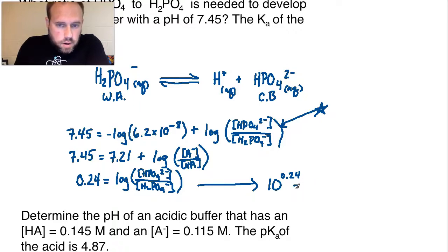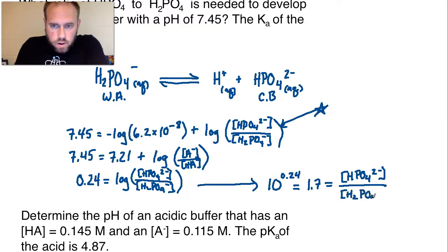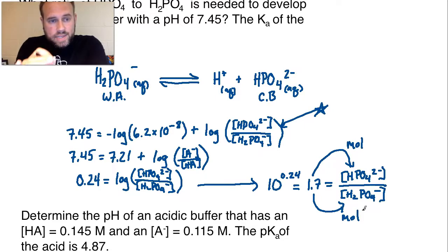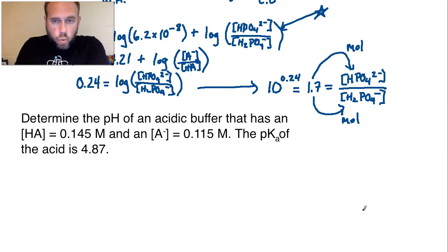So, 10 to the 0.24 is going to equal this expression without the log term there. And if I plug that in, 10 to the 0.24 is equal to 1.7. So, 1.7 is the ratio of HPO4 2- to H2PO4-. In other words, I'm going to need 1.7 moles of the conjugate base for every 1 mole of the acid that I use. And that is the correct ratio in order to get this phosphate buffer to exist at a pH of 7.45. That's the key to answering this question here.